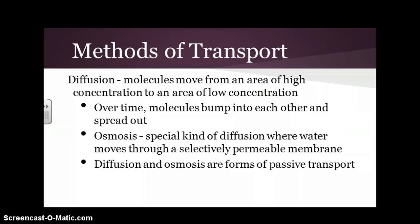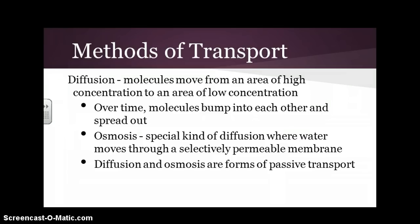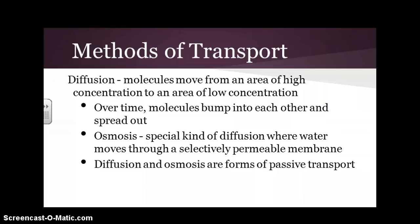Diffusion is where molecules move from an area of very high concentration to an area of very low concentration. Over time, molecules bump back and forth into each other and spread out — they like to be further away from each other. Osmosis is a special kind of diffusion where water specifically moves through a selectively permeable membrane. Diffusion and osmosis are passive transport, where molecules move back and forth at their own pace and eventually spread out.